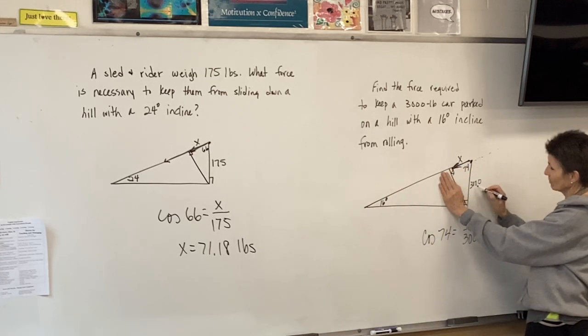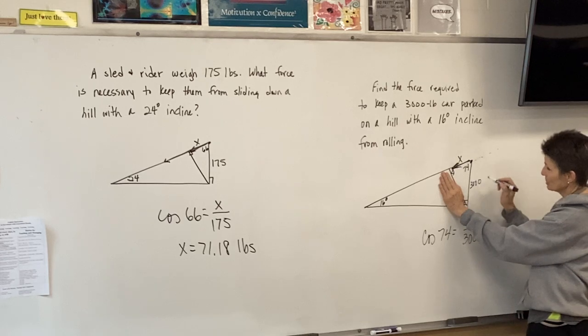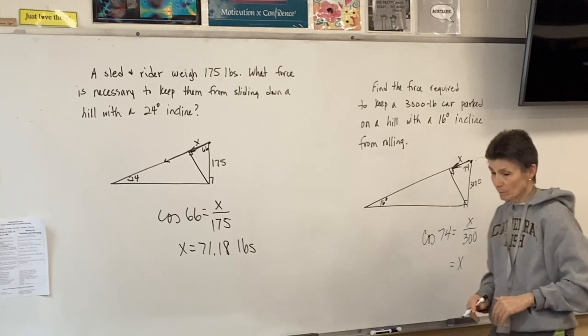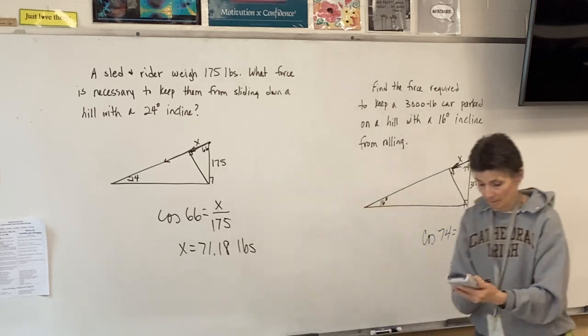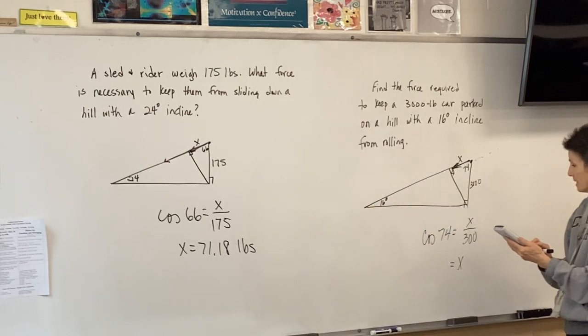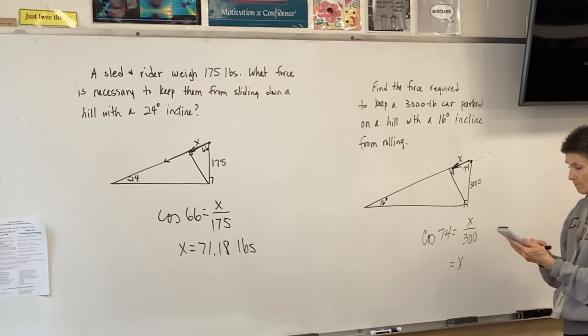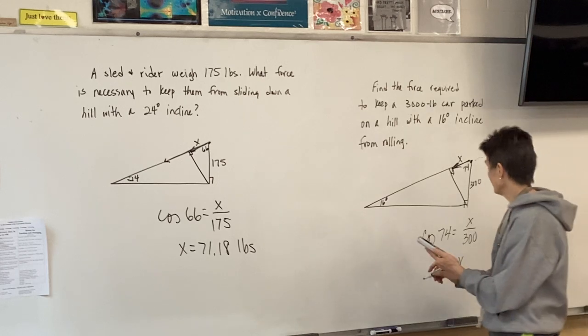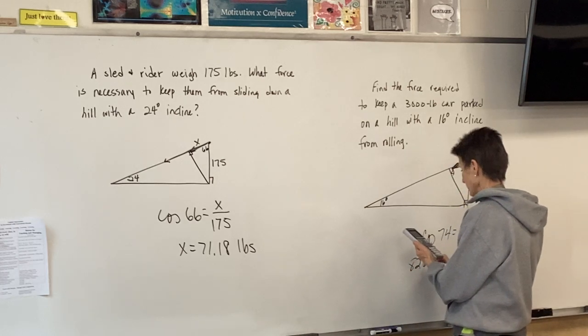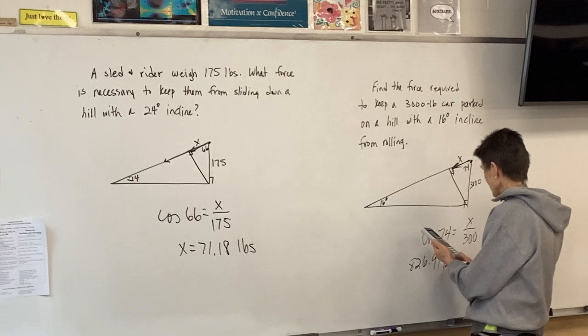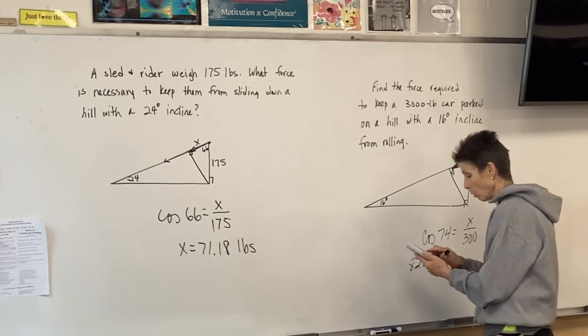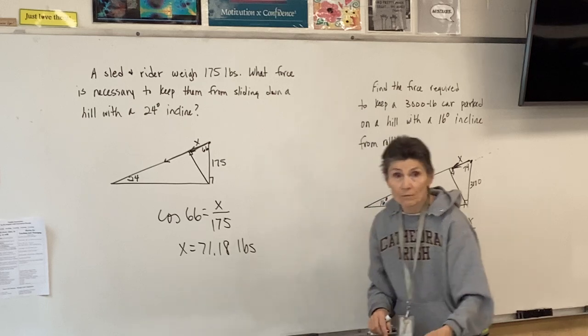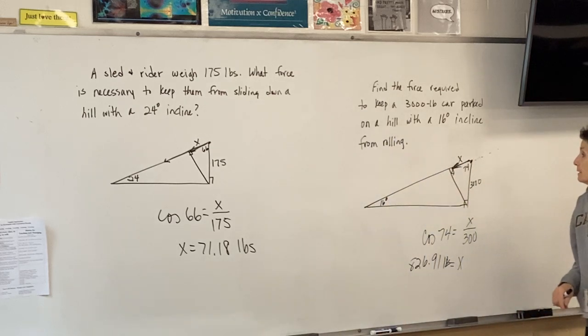So adjacent over hypotenuse. So the force that's going to be required is 3,000 cosine 74. So 826.91 pounds of force are going to be required to hold that car in place.